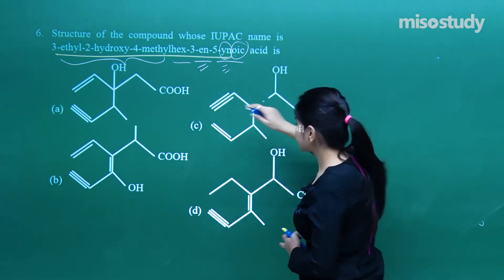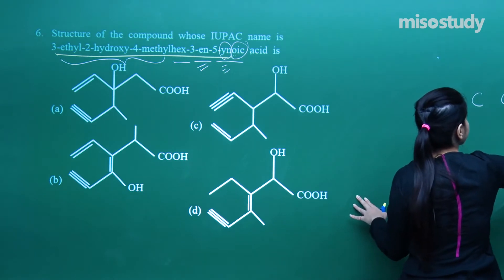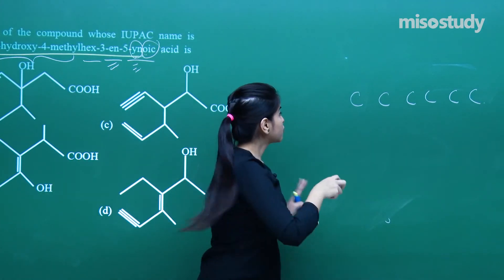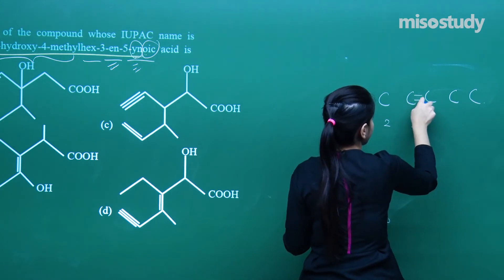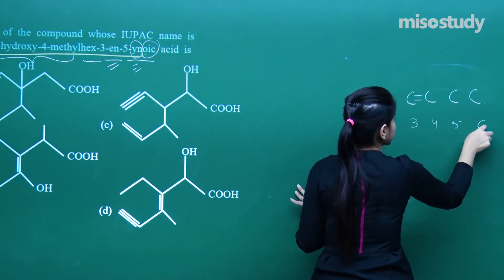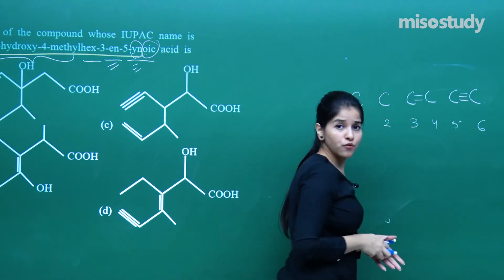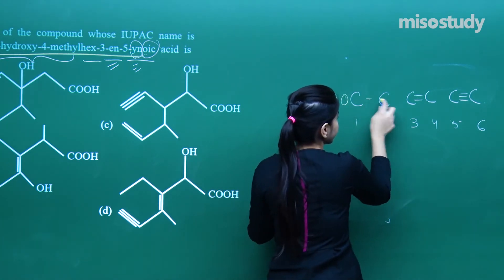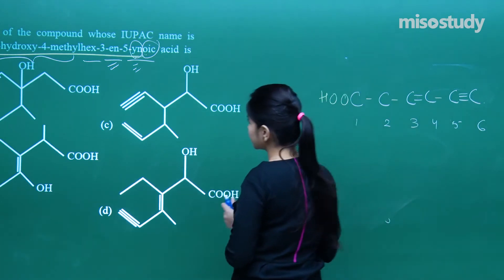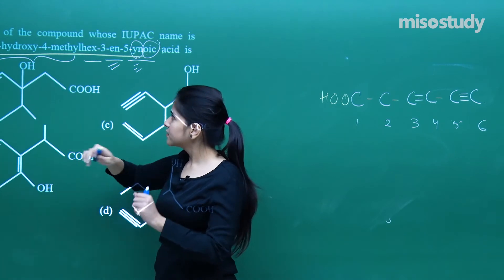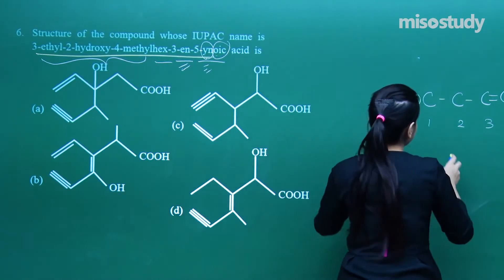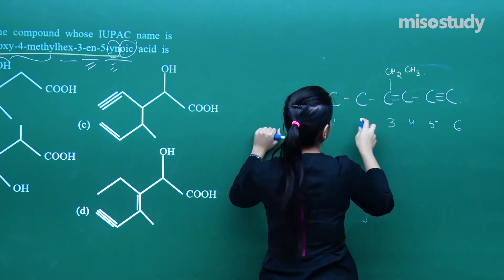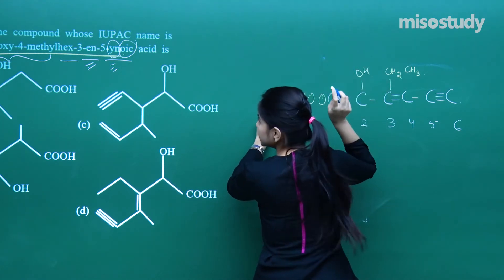So I have got the word root as 'hex', meaning 6 carbons. On to the 3 it's a double bond; on to the 5 it's a triple bond. On to the 1, 2, 3 — double bond. On to the 4, 5, 6 — triple bond. On to the first carbon it's oic acid — that means COOH. Now looking at substituents: on to the 3 it's ethyl, 2-hydroxy, and 4-methyl.